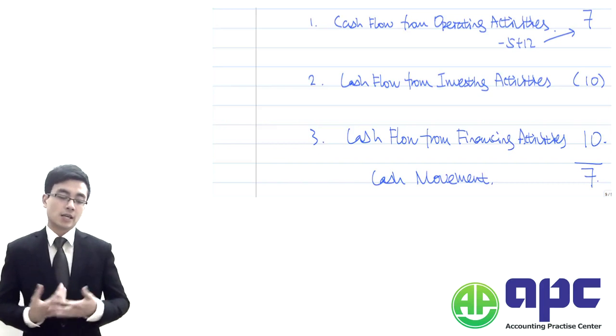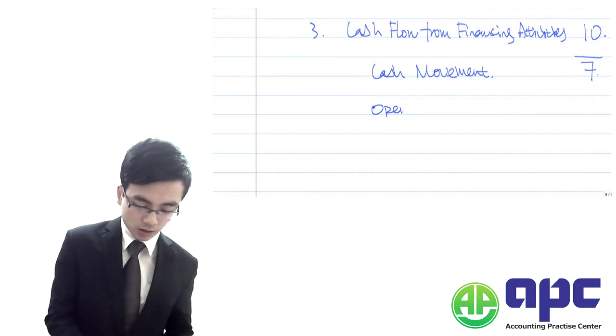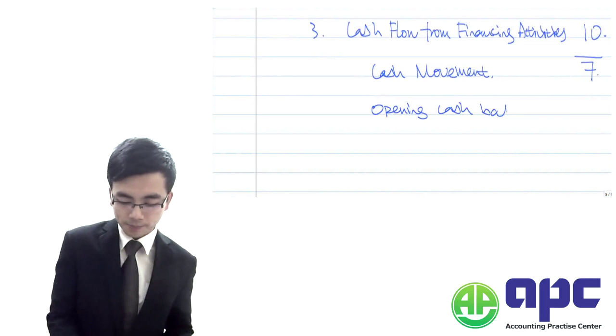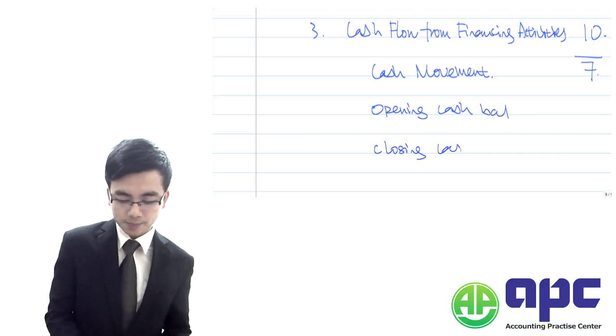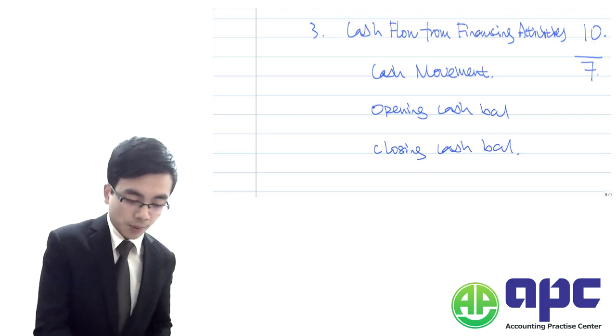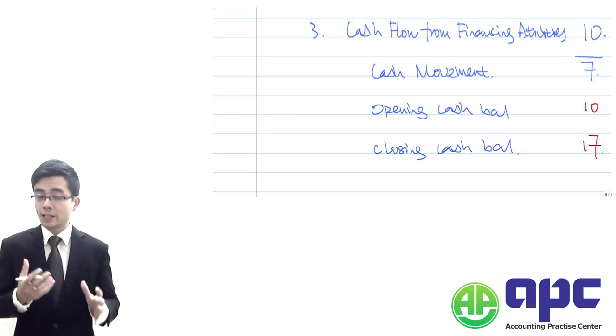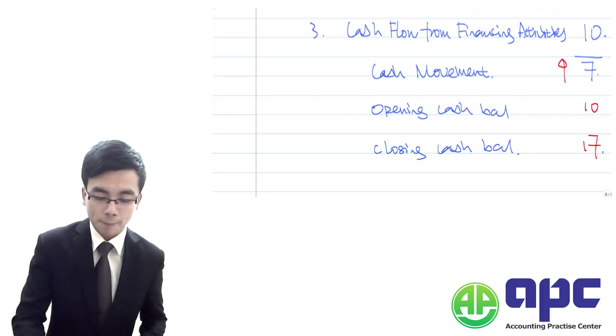How we're going to do this is simply we're going to take the opening cash balances together with the closing cash balances. So for example, the opening cash balance is 10, but closing cash balance is 17, so the cash balance has increased up by 7.